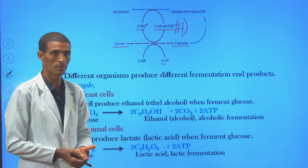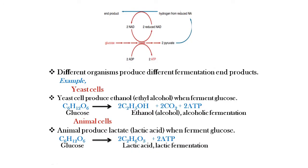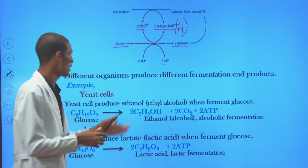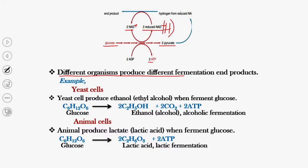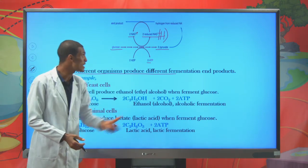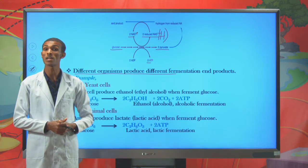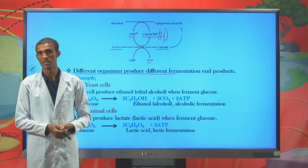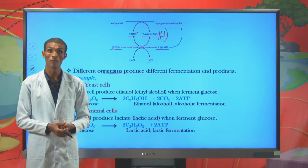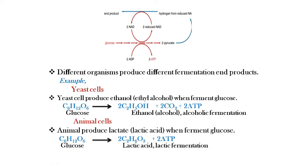Based on the type of end product they produce, the anaerobic pathway can be classified into two main types, as different organisms produce different end products when they ferment glucose anaerobically. The type of reaction is named according to its product. The product generated from fermentation is very important in many industrial applications, for example in beverage making, drink making, and food making.